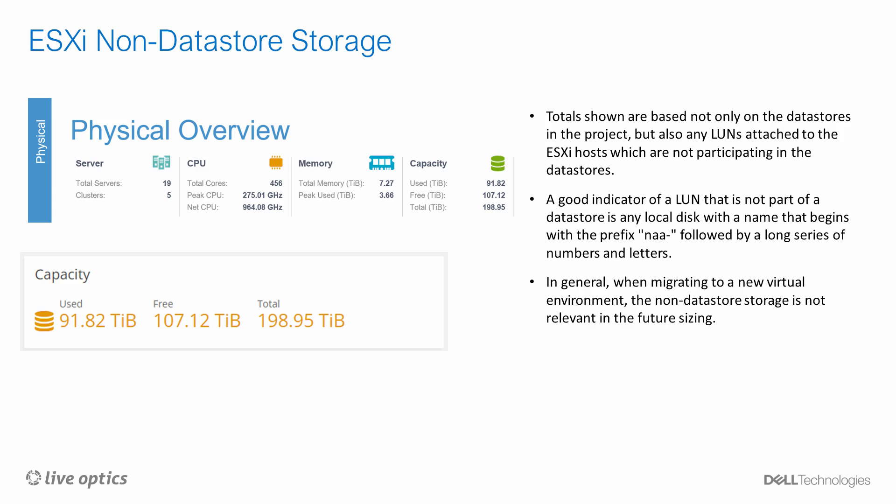Next, let's look at the total physical storage capacity. In the Live Optics and Optical Prime Dashboard, you'll get information on the total storage capacity within the project. Keep in mind that the totals shown are based not only on the data stores in the project, but also any LUNs attached to the ESXi hosts which are not participating in the data stores. A good indicator of LUNs that are not part of a data store is any local disk with a name that begins with the prefix NAA, followed by a long series of numbers and letters. When migrating to a new virtual environment, the non-data store storage is not relevant in the future sizing.